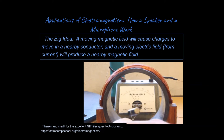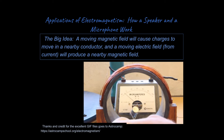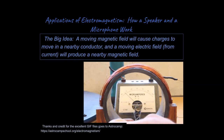Here is the big idea: a moving magnetic field will cause charges to move in a nearby conductor, and a moving electric field from current will produce a nearby magnetic field. Check out this excellent GIF animation from AstroCamp. This person has a magnet that they are twisting within a coil of wire connected to an ammeter, and what that shows is that there is a current being produced. When you twist a magnet inside a coil of wire, you produce a current in that coil of wire.